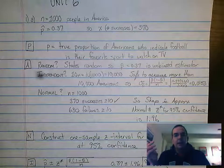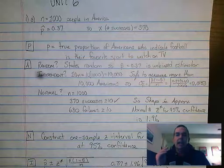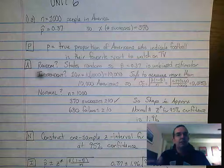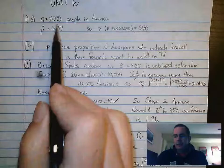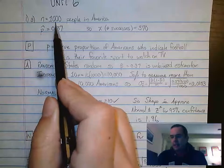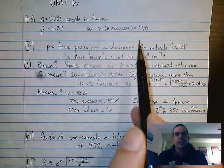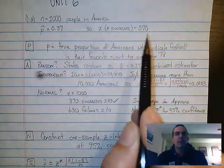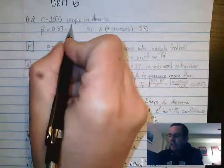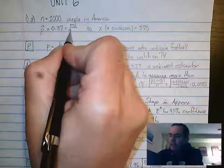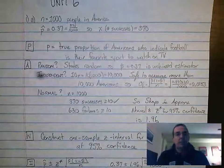The question talks about taking a random sample of 1,000 people from the United States of America and finding out how many of them indicate football as their favorite sport to watch on TV. So from the data, from the question, we find out that our sample size is 1,000. Our p-hat, our sample is 37%. What I did right away is I figured out what that number is. So how would that 37% be calculated? It's 370 out of 1,000. So I have my number of successes. I'm going to need that in a moment because we're going to go to our calculator and we're going to get the answer.